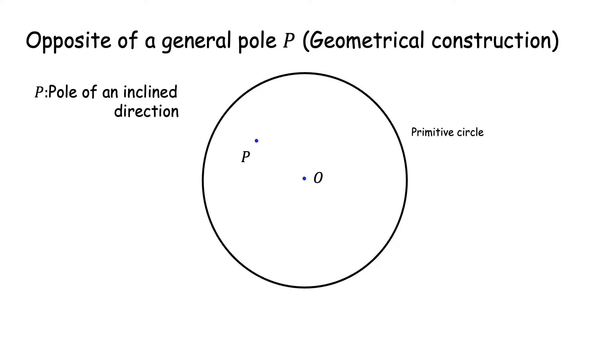To find that, we first draw a diameter through P, diameter of the primitive through P. That is easy. We join P and O and I have extended it beyond B.